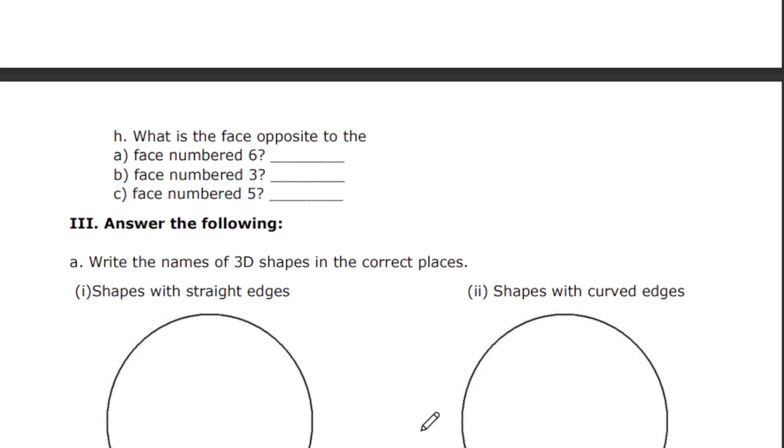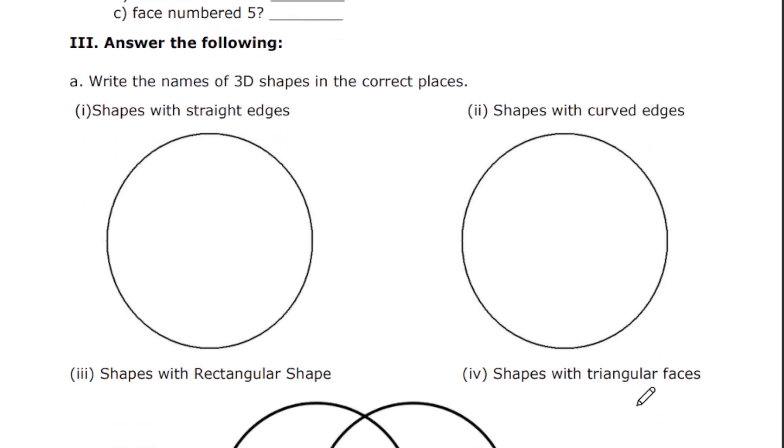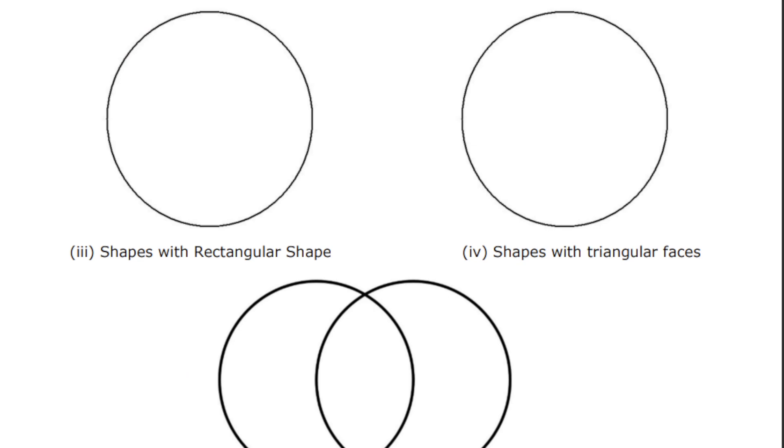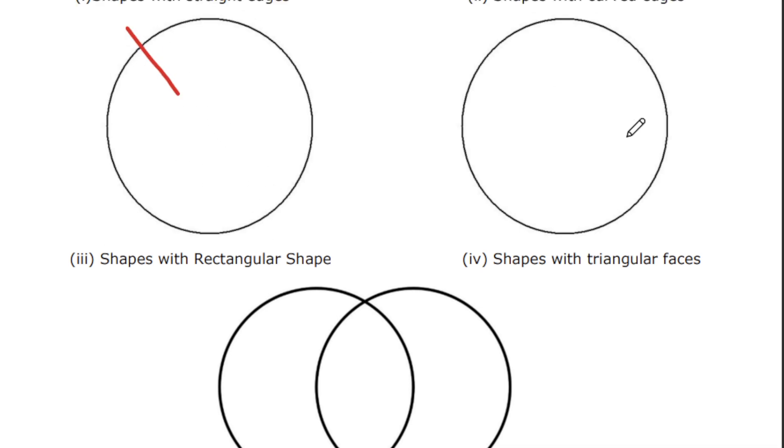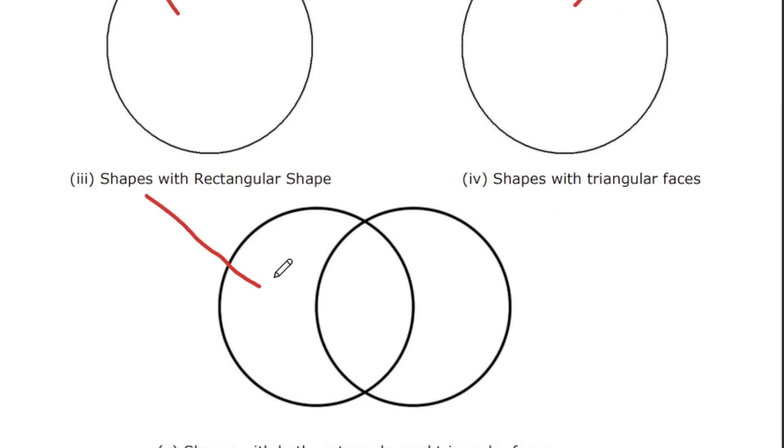Next we have answered the following. Write the names of 3D shapes in the correct place. You have to write shapes with right straight edges, shapes with curved edges, shapes with rectangular faces, shapes with triangular faces. This is an intersecting point. You have to write shapes with both rectangle and triangle faces here. Option 1 goes here, option 2 goes here, option 3 goes here, and 4 goes here. Both rectangle and triangle properties goes here.